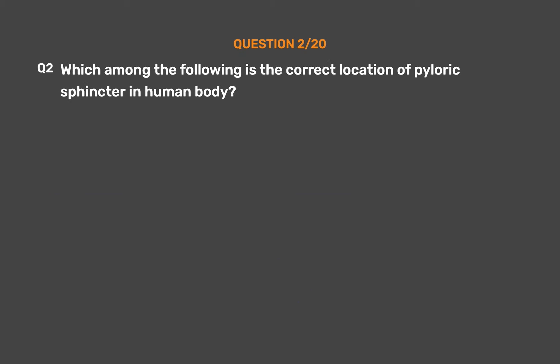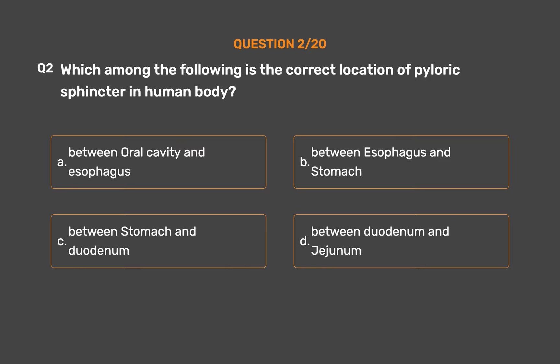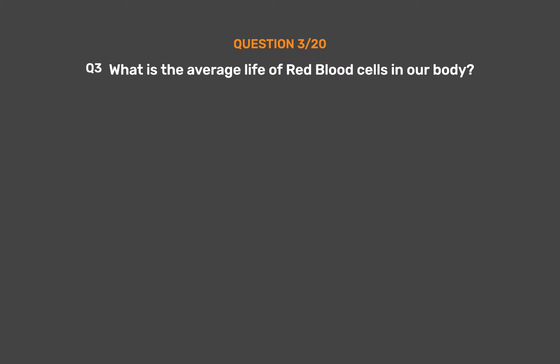Question No. 2. Which among the following is the correct location of the pyloric sphincter in the human body? Option A: Between oral cavity and esophagus. Option B: Between esophagus and stomach. Option C: Between stomach and duodenum. Option D: Between duodenum and jejunum. The correct answer is Option C: Between stomach and duodenum.